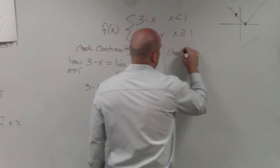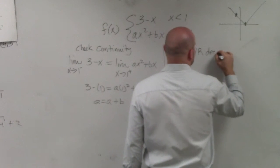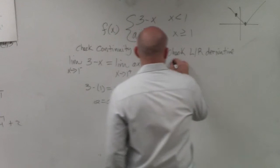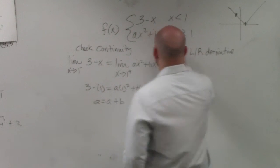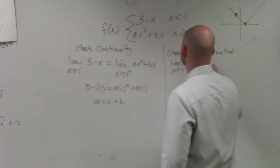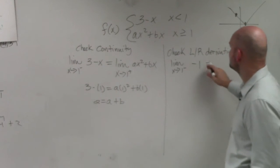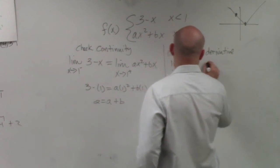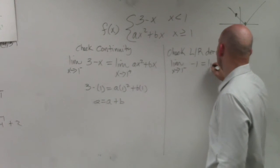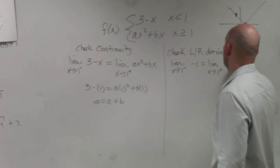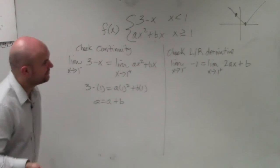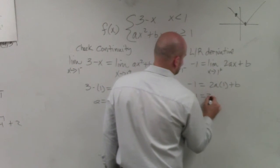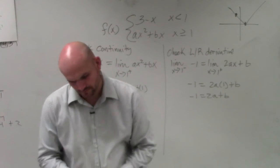So I'm going to check left and right hand derivatives. Because you can see sometimes, even if it's continuous, the left and right hand derivative do not exist. So I'm going to check the limit of x approaches 1 from the left of the derivative of this function, which is just going to be negative 1. And that's equal to the limit—actually, let's do it like negative 1 is equal to the derivative of the limit as x approaches 1 from the positive, which is 2ax plus b. Then I plug in for 1 in for x, which I'm taking the limit of.